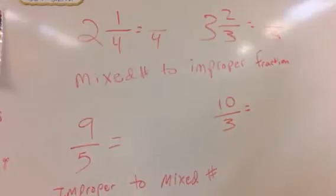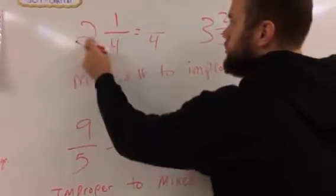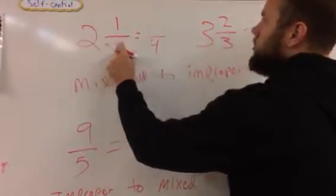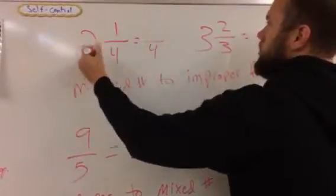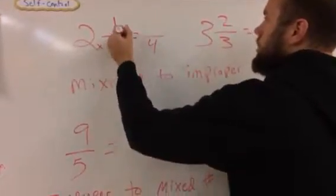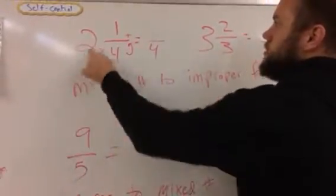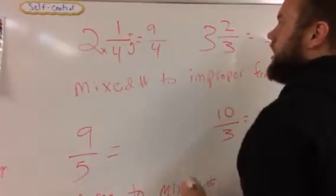Now we want to talk about the top number. The quick way to do it is to multiply 2 times 4 and then add 1. 2 times 4 is 8 plus 1 is 9.